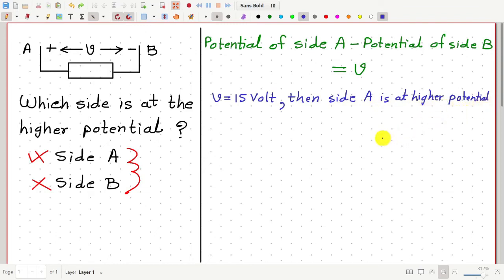However, if we have V equal to minus 15V, then side B will be at the higher potential.